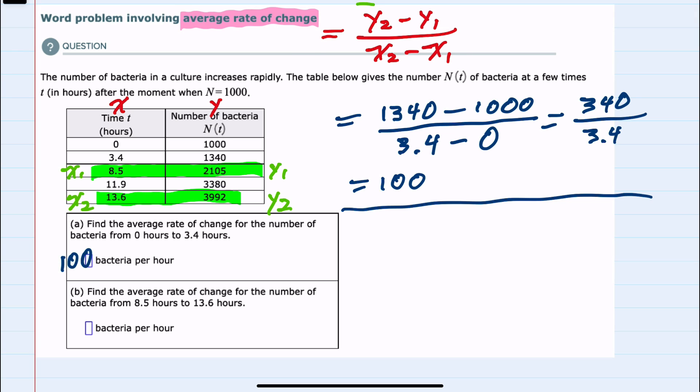We can again substitute into our formula. y2 is 3992 minus y1, which is 2105. In the denominator, x2 is 13.6 minus x1, which is 8.5.